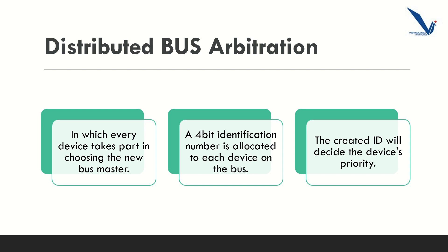Distributed bus arbitration. In distributed bus arbitration, every device takes part in choosing the new bus master. Each device on the bus has an equal chance of being granted access to the bus based on a predetermined priority scheme. When a device wants to access the bus, it checks to see if the bus is currently in use. If it is not, the device can immediately access the bus. If the bus is in use, the device waits for a random time before trying again. A 4-bit identification number is allocated to each device on the bus, and this ID decides the device priority. This method helps to reduce the chances of collision and improves the overall efficiency of the bus.